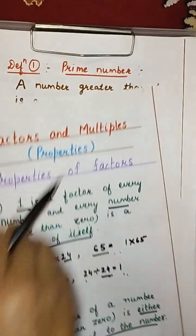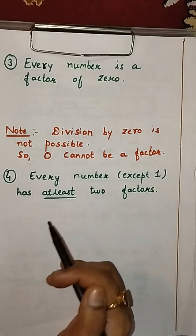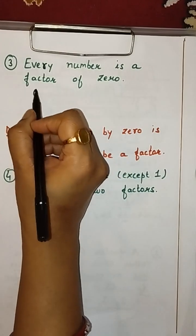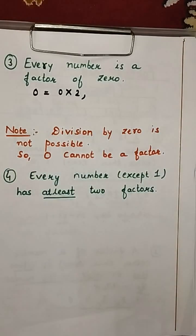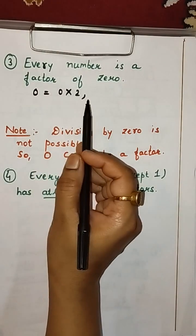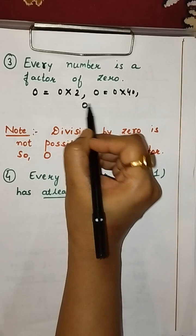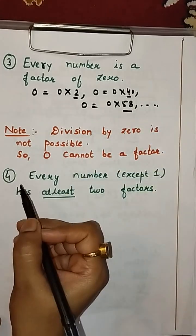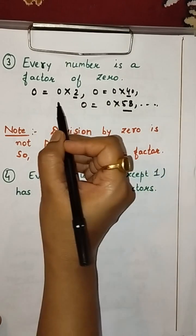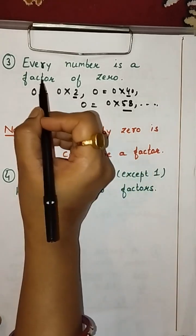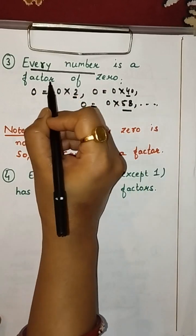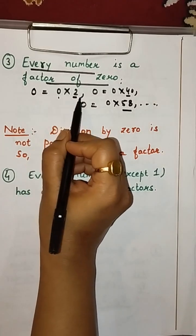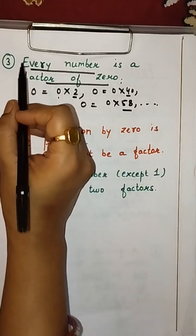Next property: every number is a factor of 0. Since 0 can be written as a product of 0 and any other number — for example, 0 into 40 is 0, or 0 into 58 is 0 — numbers like 2, 4, and 58 are all exact divisors of 0. By definition, every number is a factor of 0. This is the third property.